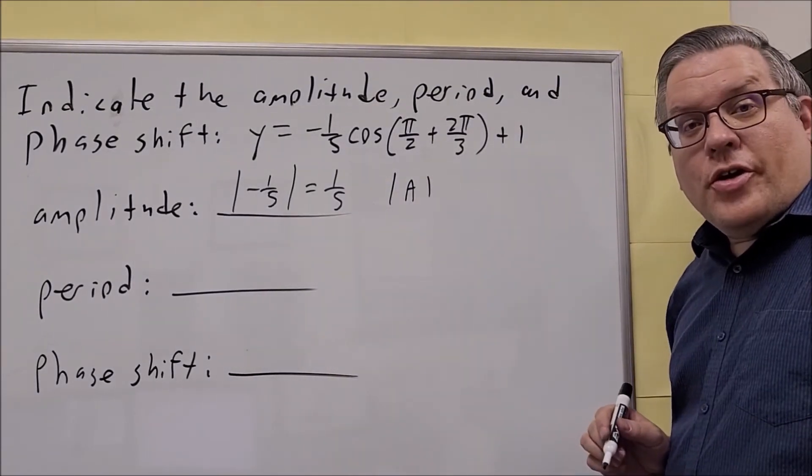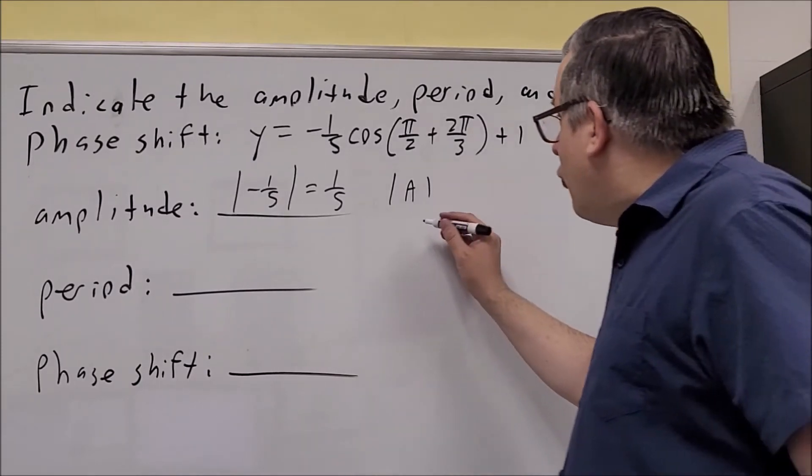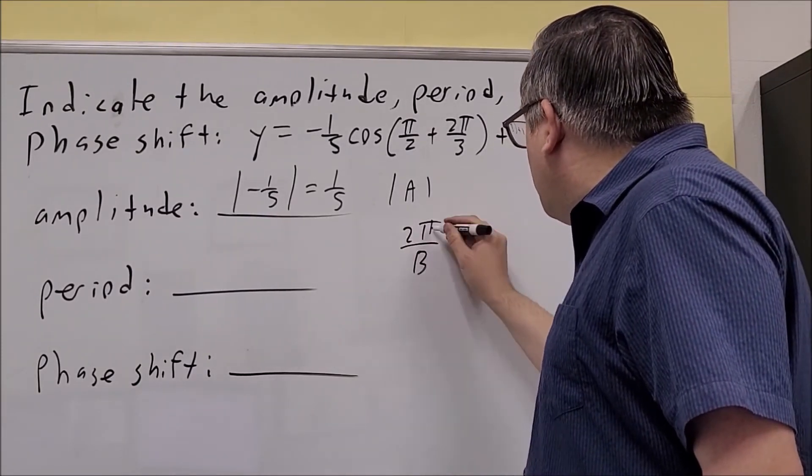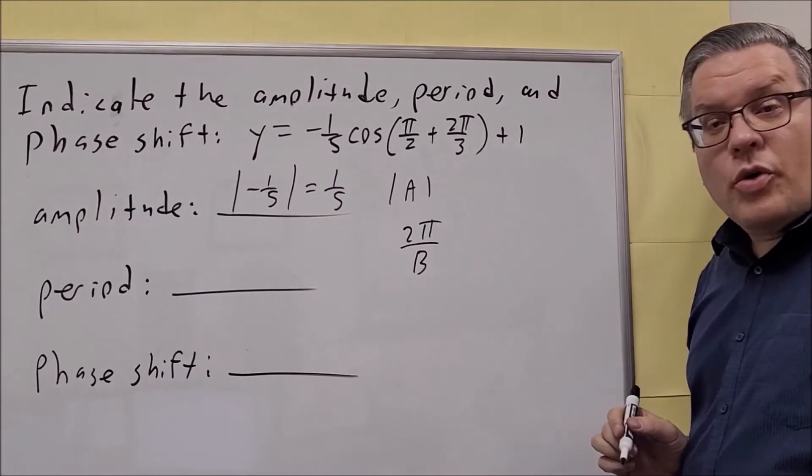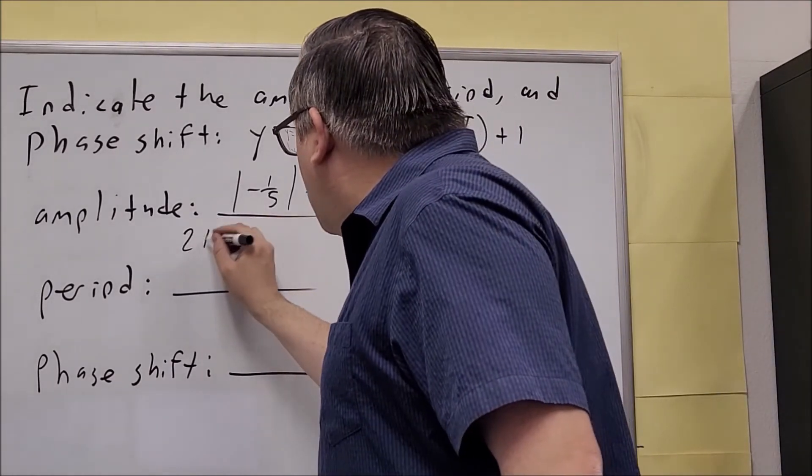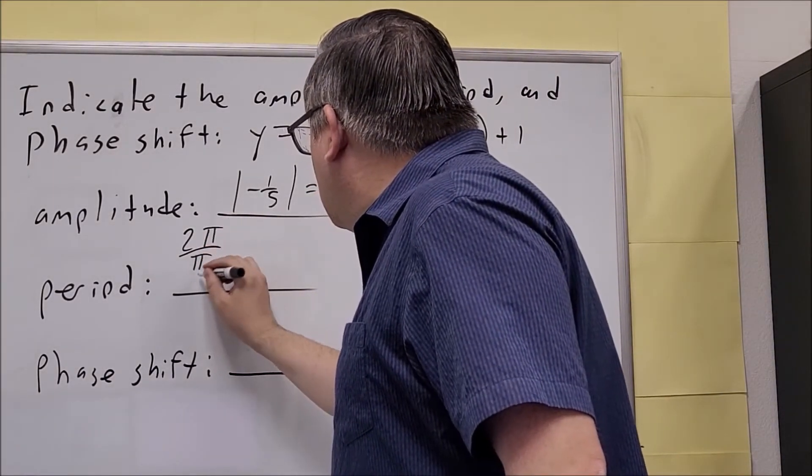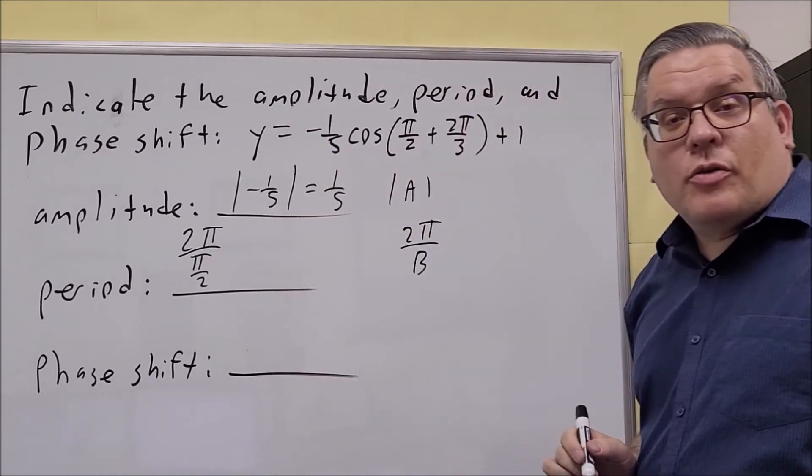Next, take a look at the period. Period is, again, the formula for that is 2π over B. Okay, so we're going to do 2π over B. So 2π over π over 2. We need to flip and multiply this one.